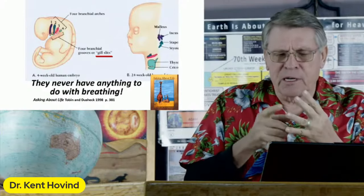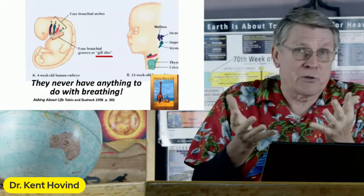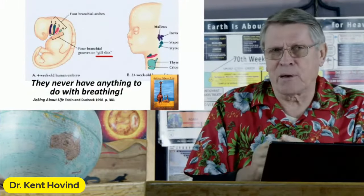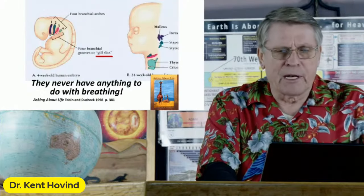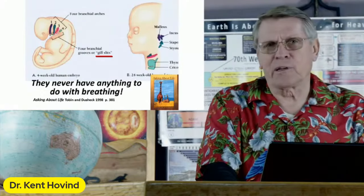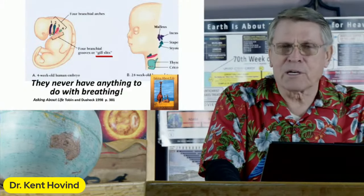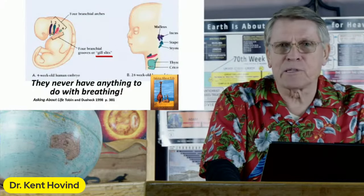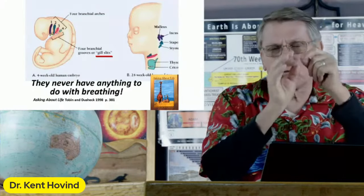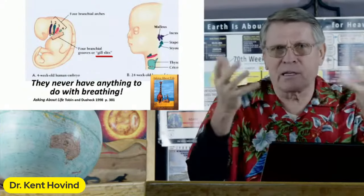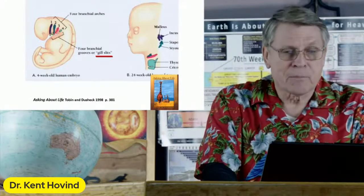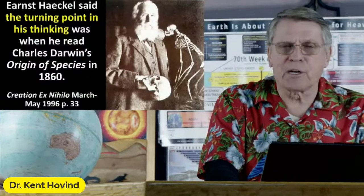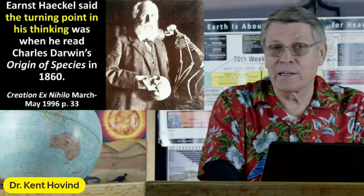Evolution says we started off like a fish, then amphibian, reptile, mammal. But those structures never have anything to do with breathing. Why would you use the deceptive word 'gill slit' or 'gill pouch'? And saying the embryo has a tail — it doesn't. The backbone grows first, the frame of the body grows first, and then the attachments go on. Haeckel said when he read Darwin's book it turned him around — he wanted to get rid of God.